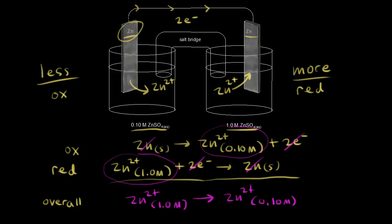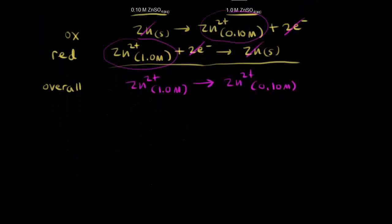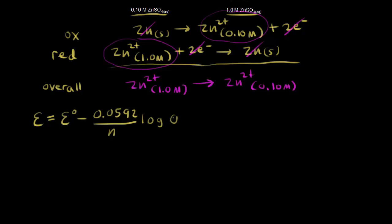How do we find the voltage of our concentration cell? The Nernst equation allows us to calculate the potential of the cell. The cell potential E is equal to the standard cell potential E° minus 0.0592 over N — the number of moles of electrons transferred — times the log of Q.